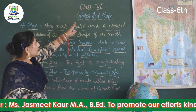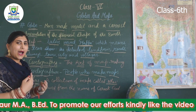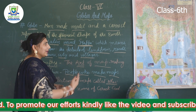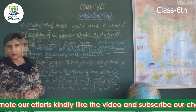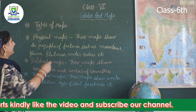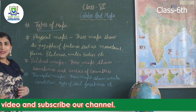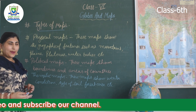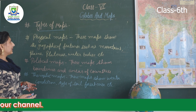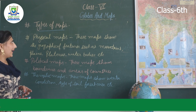Globe and maps are different from each other, but both represent countries and states. There are various types of maps which show us different features of the earth, but basically there are three types.